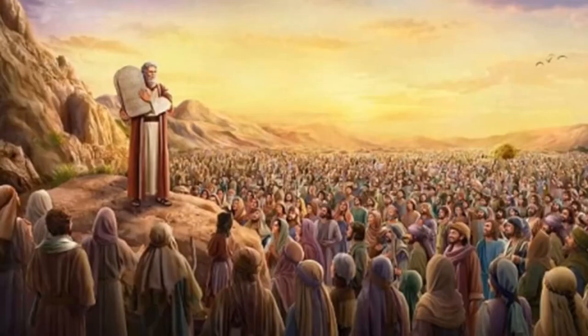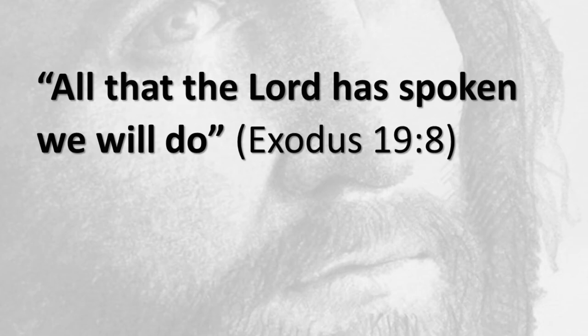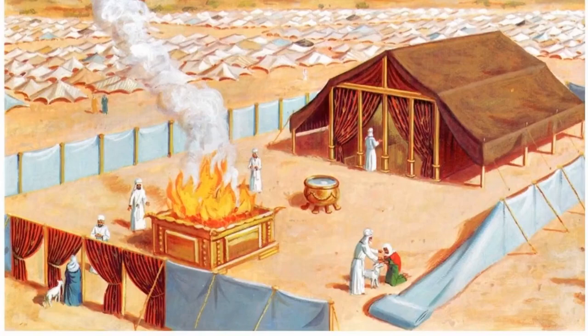The children of Israel escaped through the Red Sea and made their way to Mount Sinai, where God gave them the Ten Commandment Law. They promised to keep it, saying, 'All that the Lord has spoken we will do.' But God knew their weak human nature and made a provision. As soon as he gave the law, he also gave them instructions to build a sanctuary where they could find forgiveness by offering sacrifices that symbolized the Lamb of God.